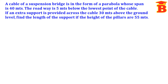Now let us see the problems. A cable of a suspension bridge is in the form of a parabola whose span is 40 meters. The roadway is 5 meters below the lowest point of the cable. If an extra support is provided across the cable 30 meters above the ground level, find the length of the support if the height of the pillars is 55 meters.